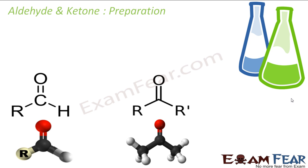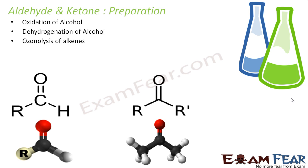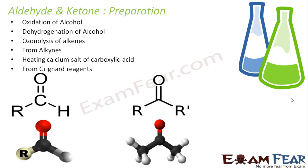Now I will study some methods to prepare aldehydes and ketones. Aldehyde and ketone are grouped together because they have a lot of similarity in chemical properties, physical properties, and methods of preparation. We can prepare them by: oxidation of alcohol, dehydrogenation of alcohol, ozonolysis of alkenes, from alkynes, by heating calcium salts of carboxylic acids, and from Grignard reagents. These six methods apply to both aldehydes and ketones.